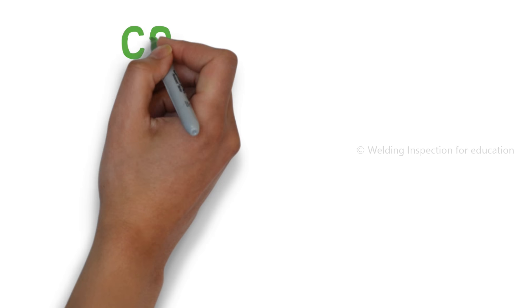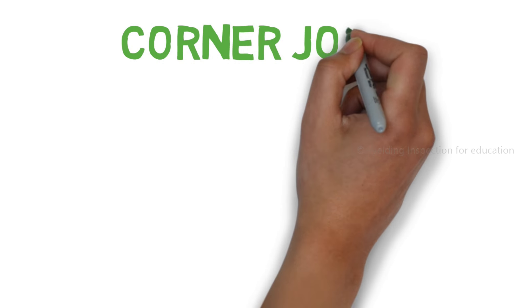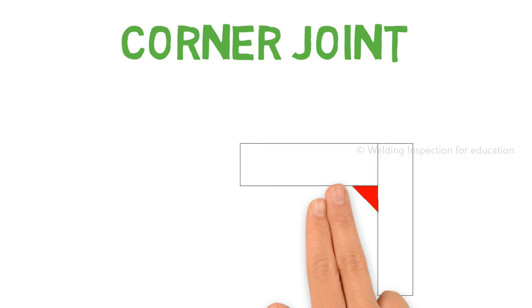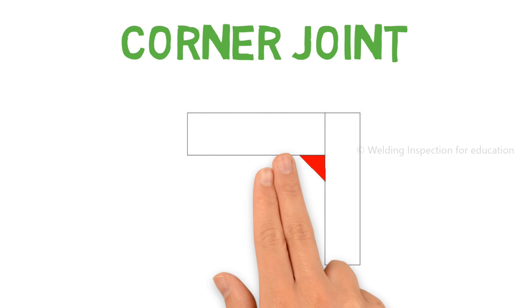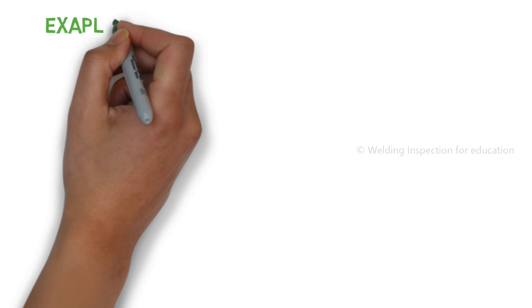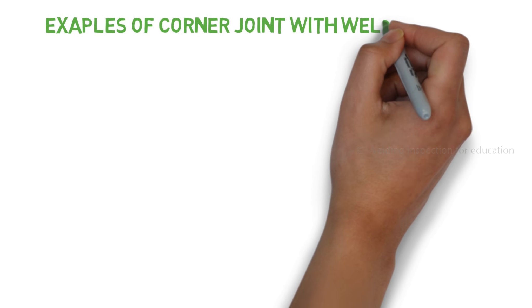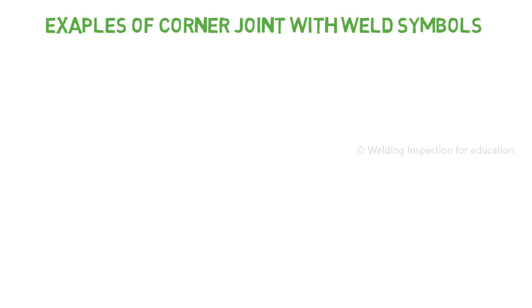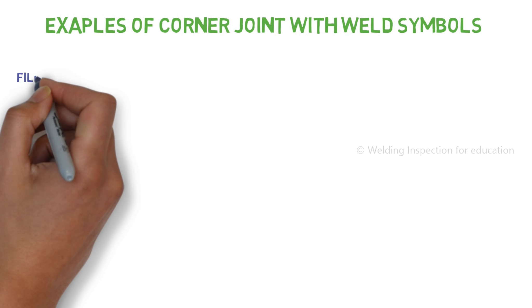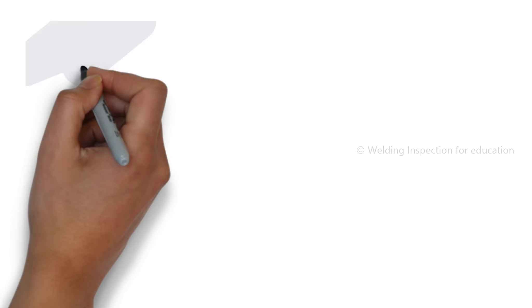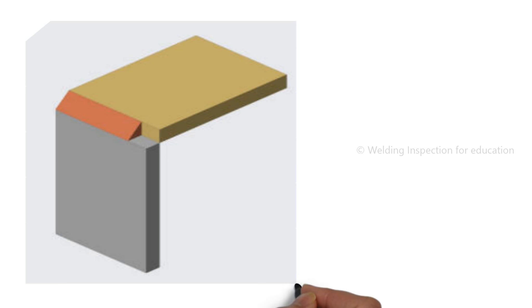Now let's see some examples of corner joint. The important thing about corner joint is that it is different from T joint — in a T joint you can weld on both sides, but a corner joint is only on one side. It is a perpendicular connection but it's not possible to weld both sides. First, fillet weld corner joint: both surfaces are meeting each other only at the corner.